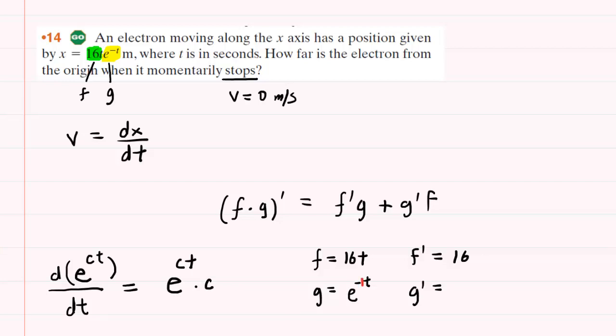So when we do the derivative following this rule, we would have e raised to the negative 1t multiplied by that constant that was in front of the t. And that constant was negative 1. So that would be the derivative of e to the negative t with respect to time. Probably is nicer to write that as negative e to the negative t.